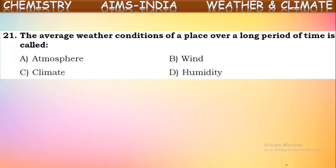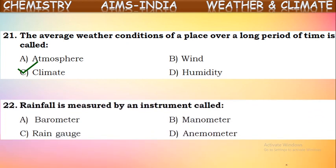The average weather conditions of a place taken over a long time — around 25 years — the average of all those conditions is called the climate of that place. The instrument used for measuring rainfall is the rain gauge. Rainfall measurement is done in centimeters or millimeters.